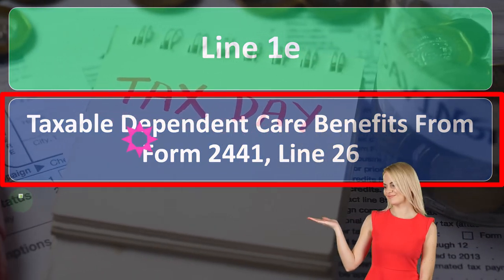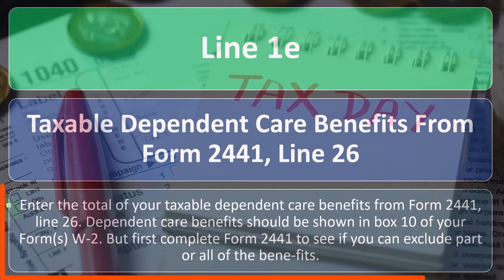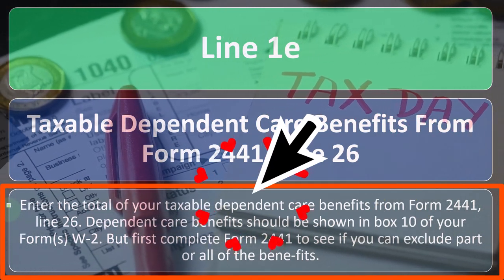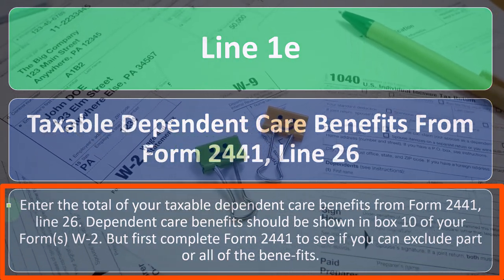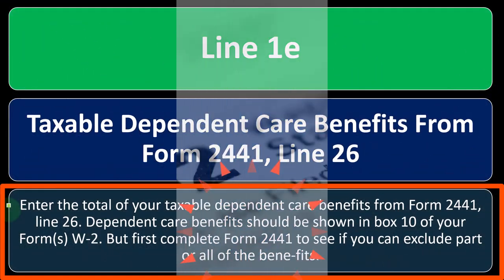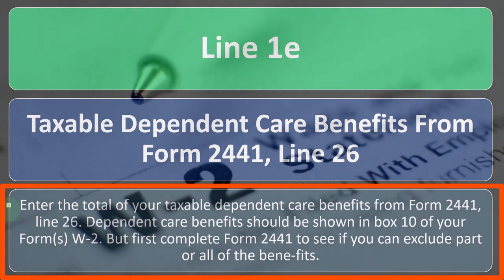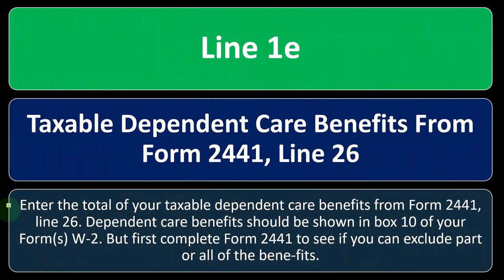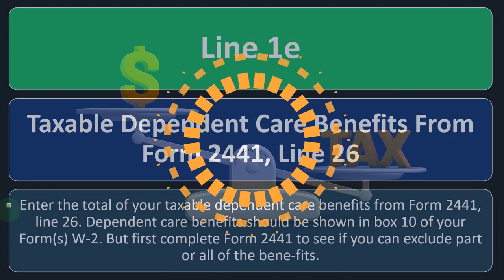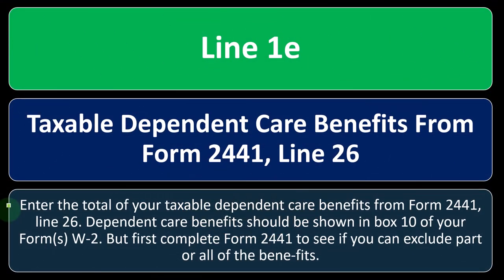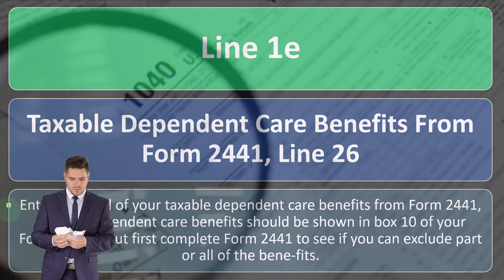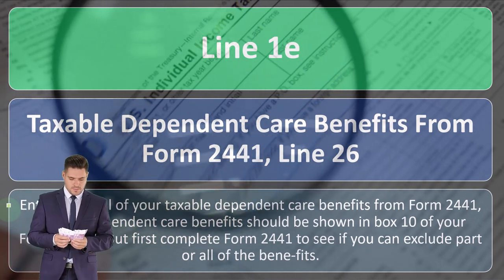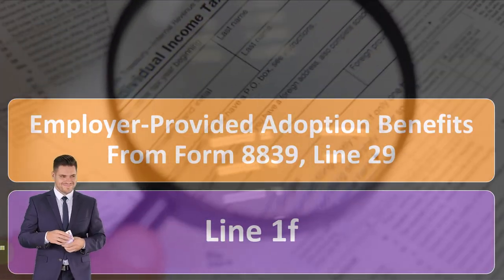Line 1e covers taxable dependent care benefits from Form 2441, Line 26. Enter the total of your taxable dependent care benefits from Form 2441, Line 26. Dependent care benefits should be shown in box 10 of your Form W-2. If you're using tax software, it'll help you populate this information on the tax return. First, complete Form 2441 to see if you can exclude part or all of these benefits.